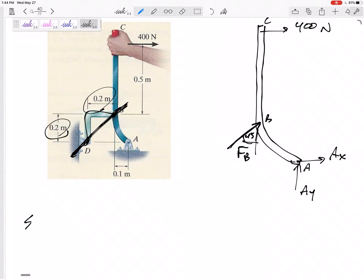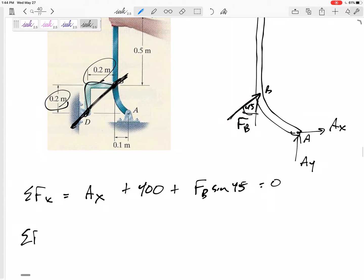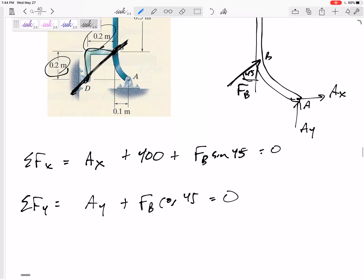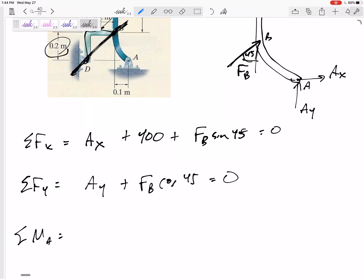Let's sum the forces in the X direction. I've got AX and 400 and FB sine 45 equals zero. Sum my forces in the Y direction. I've got AY and FB cosine 45 equals zero. Still can't solve. I probably should have just started with summing the moments. I think summing the moments about A makes the most sense because AX goes straight through it, AY goes straight through it.